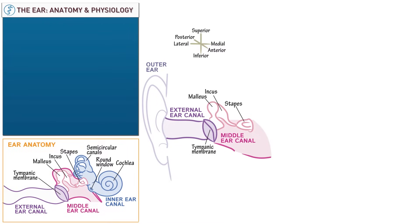Indicate that the stapes abuts the oval window. When sound is transmitted through the ossicles, the stapes pushes the oval window into the inner ear canal. We remember the orientation of these ossicles with the acronym MIS.